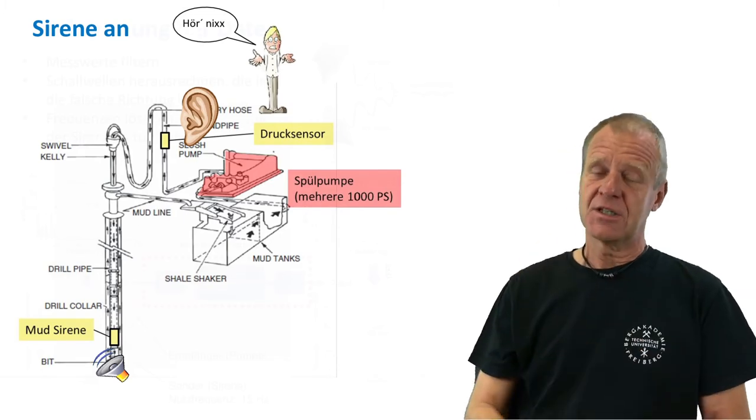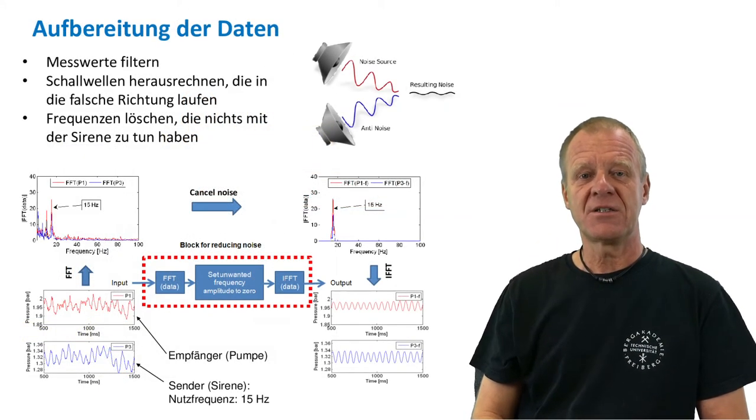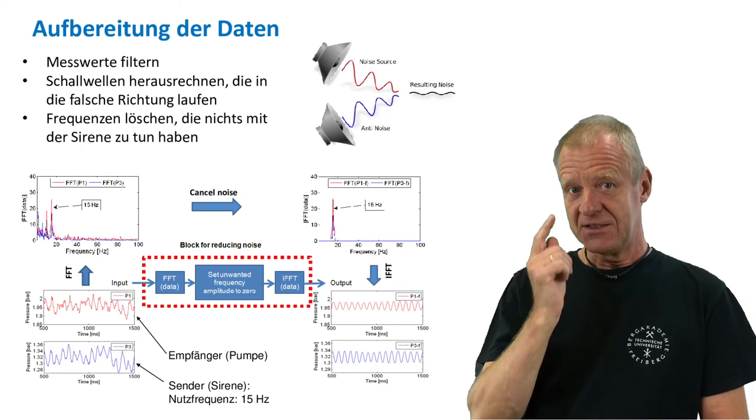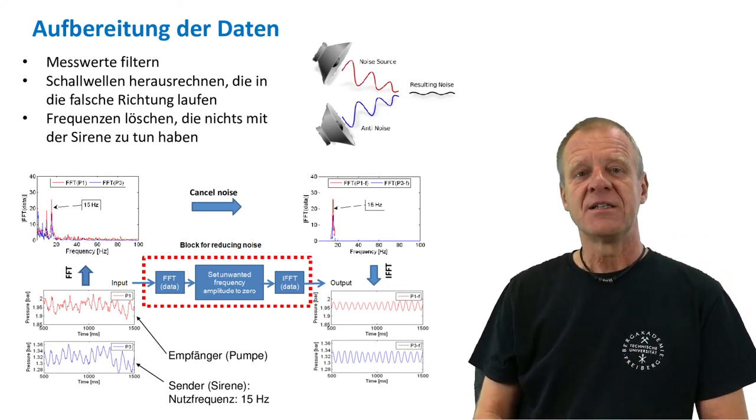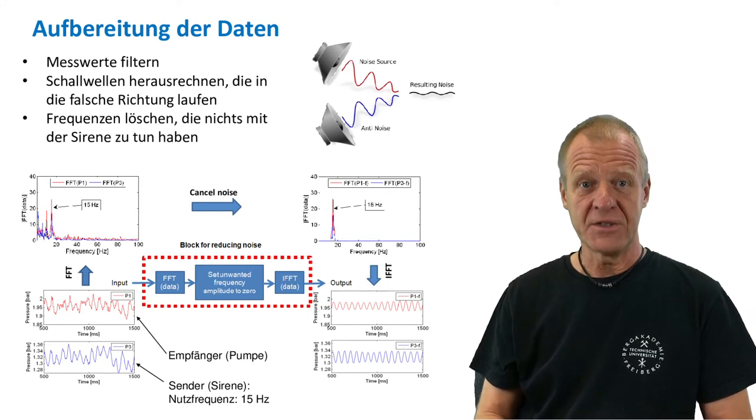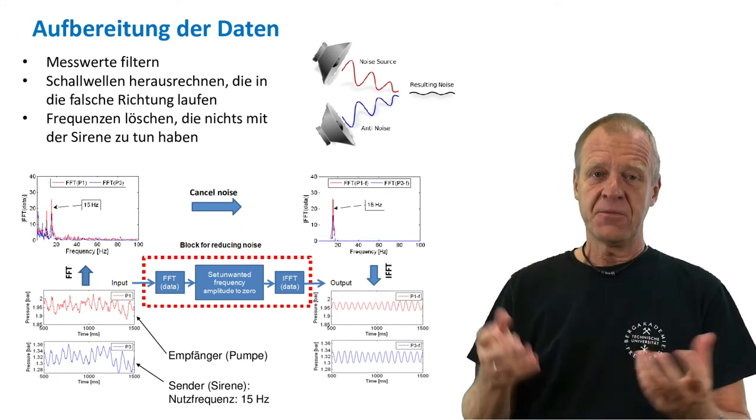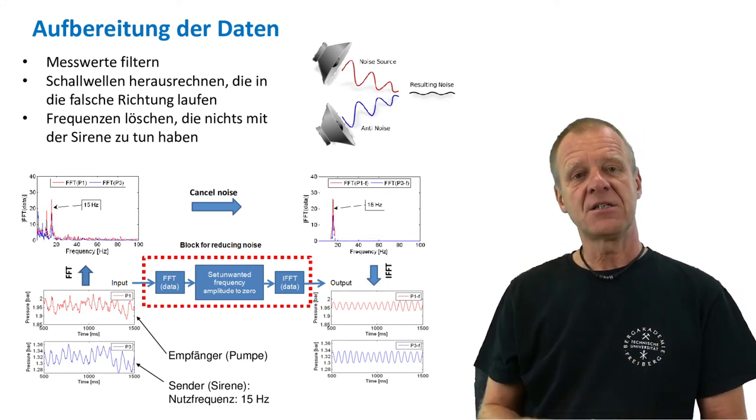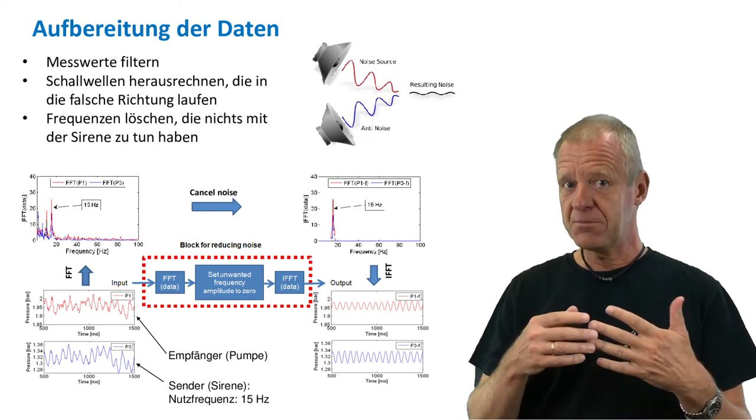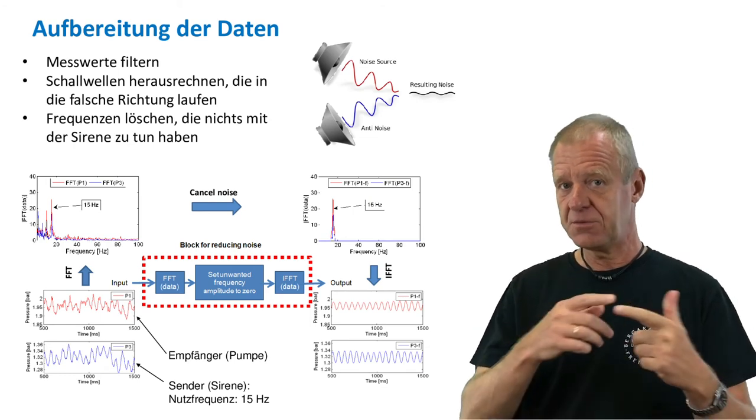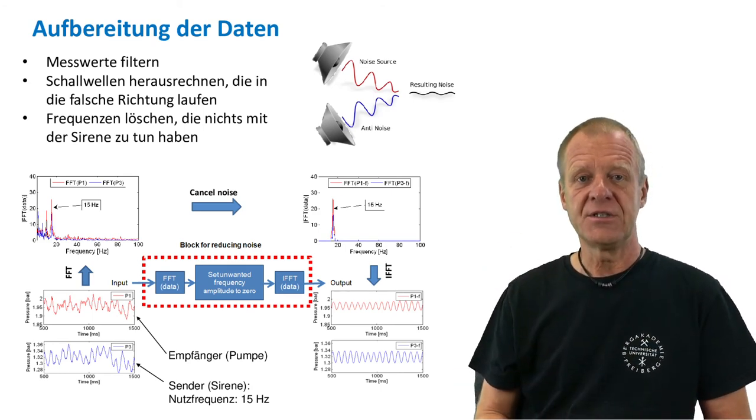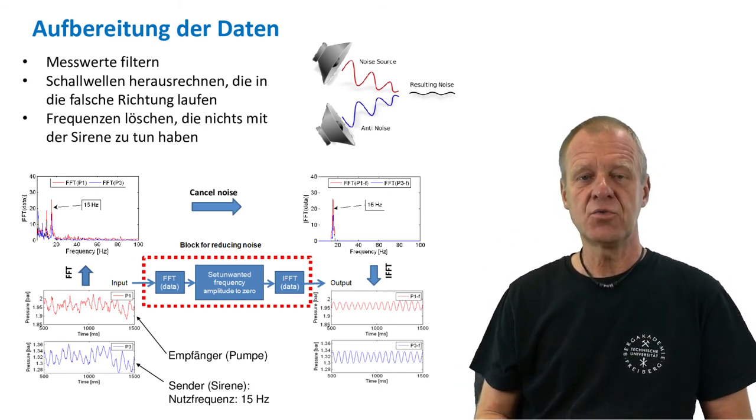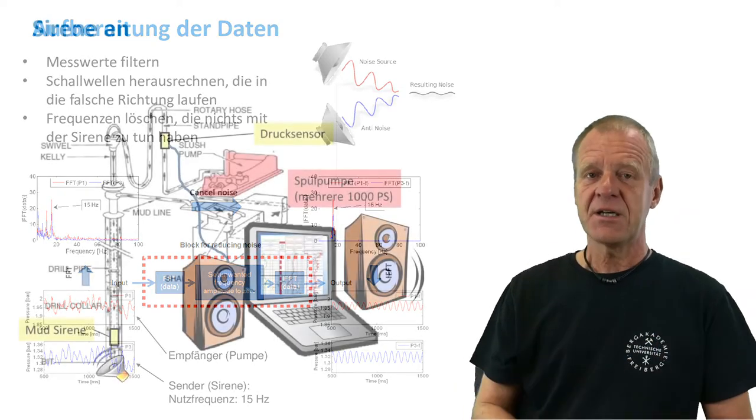So, this is where our scientists, mathematicians and physicists come to play. By applying some special algorithms, they are able to extract the signal from the noise. First, they smoothen the data. They eliminate all those sound waves which travel through the standpipe in the wrong direction. And they delete all frequencies that are out of the range of the mud siren and out of our data transfer.